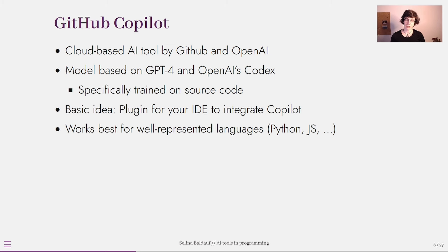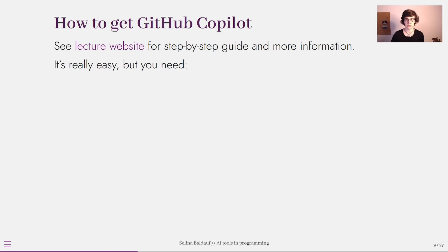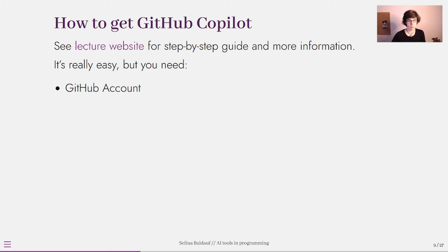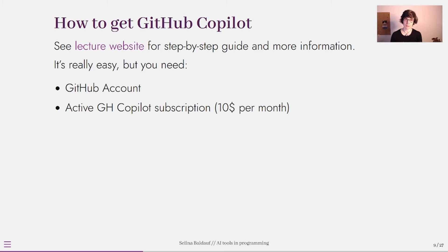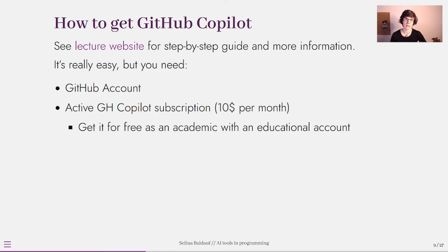A few words on how you can get GitHub Copilot — it's really easy and you can find a very detailed step-by-step guide on the lecture website and linked in the video description. The first thing you need is a GitHub account. You also need an active GitHub Copilot subscription, which usually costs around $10 per month, but as an academic — whether a student, teacher, postdoc, or professor — you can get it for free by applying for an educational account.